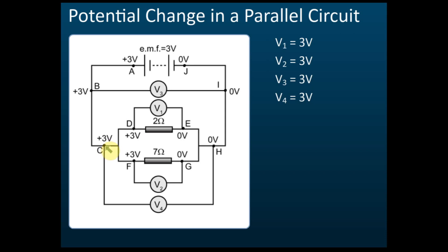From B to C the potential remains the same because there's no resistance. This is the parallel circuit, so the circuit splits at this point. But from C to D there's still no resistance, and C to D no resistance. If there's no resistance, no work is done, therefore the potential remains the same — positive 3 volts. So does C to F — no resistance, so the potential remains the same.